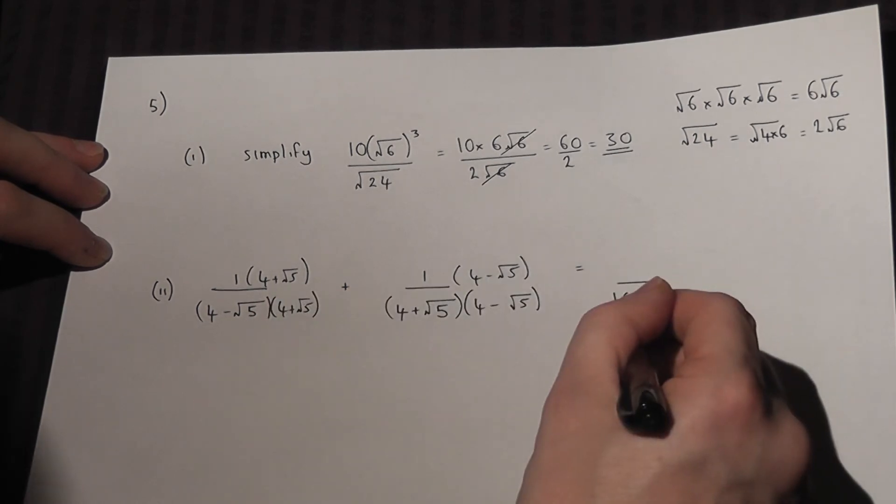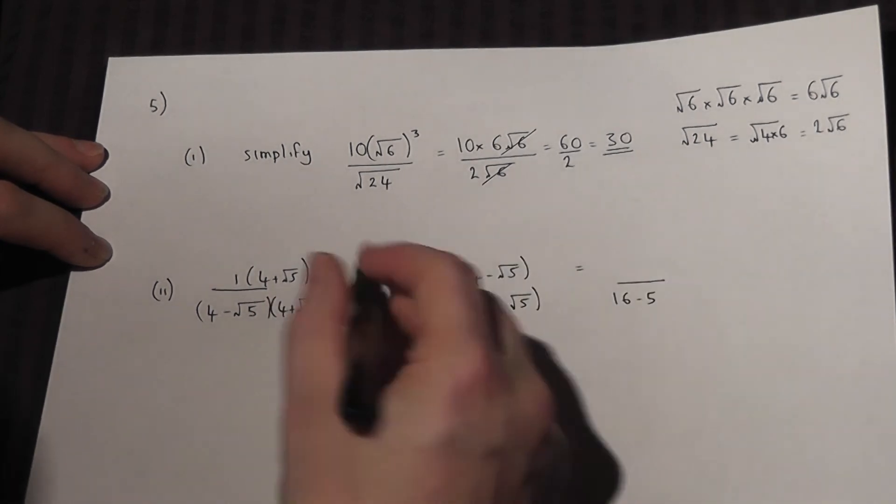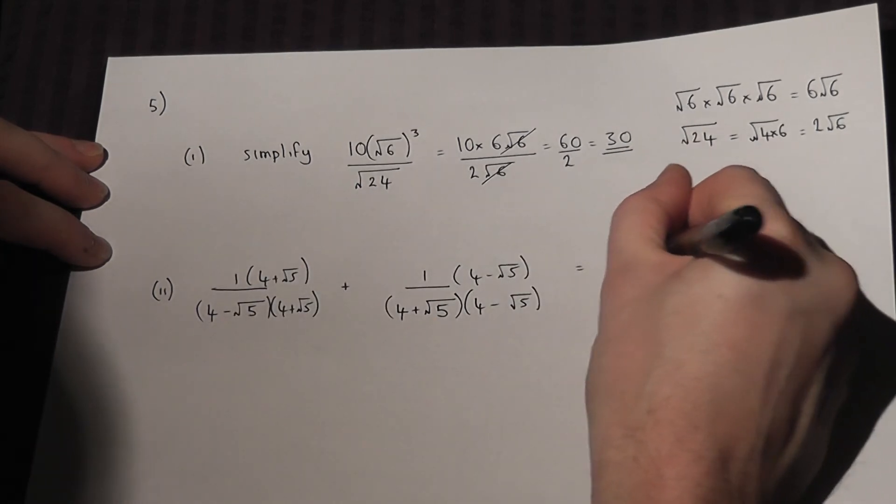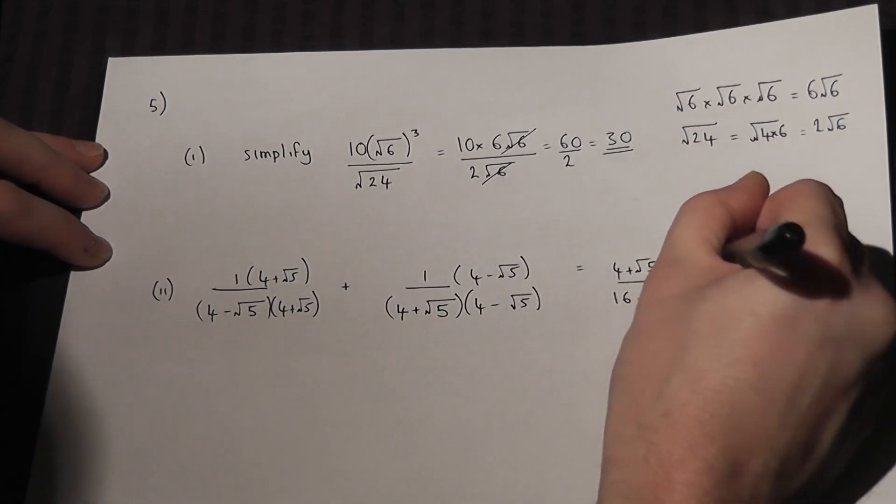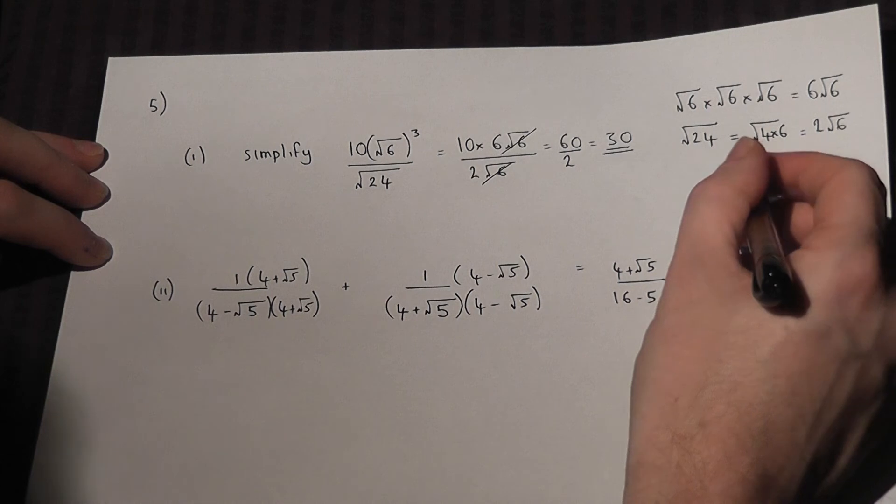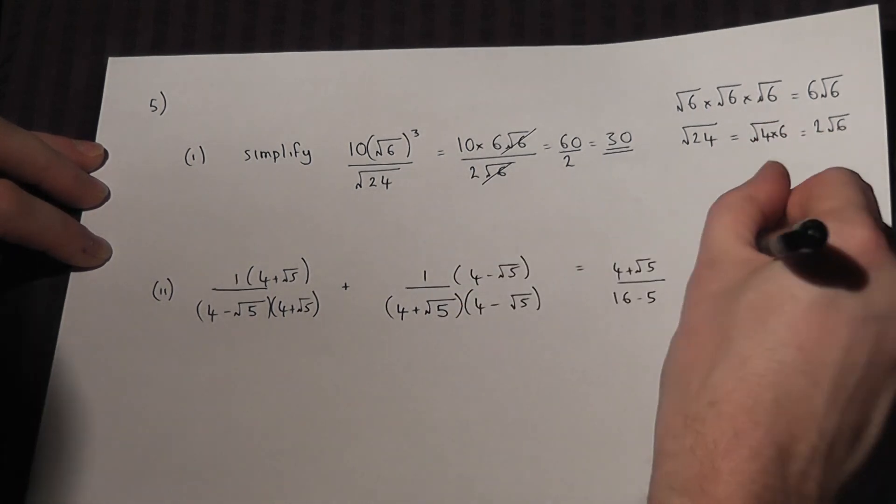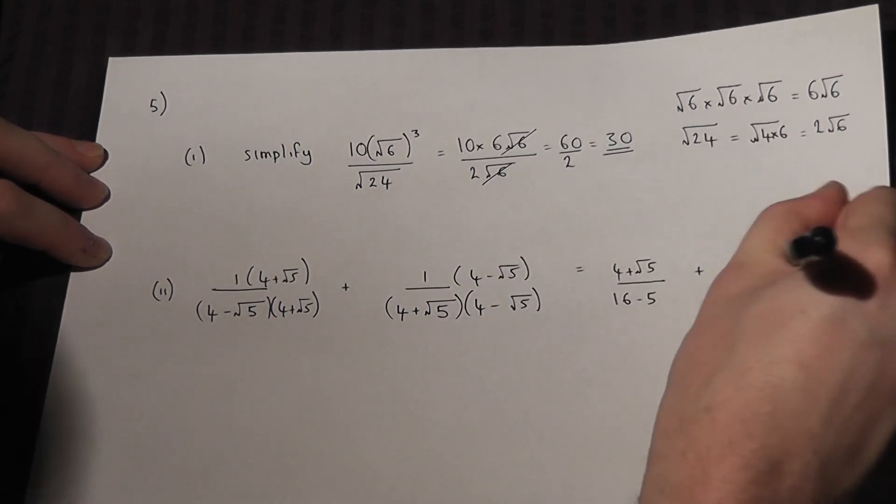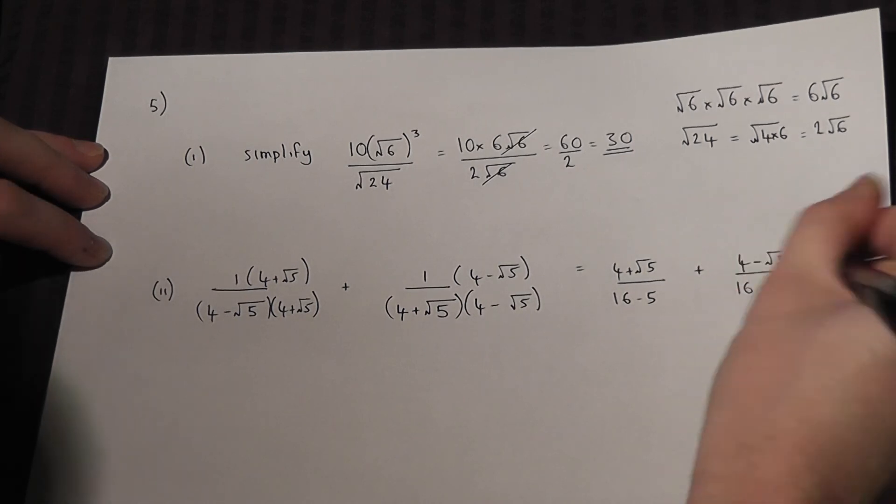So the bottom just becomes 16 take away 5, and then the top is just 4 plus root 5. In a similar way, the second fraction would become 4 minus root 5, all over again 16 take away 5.